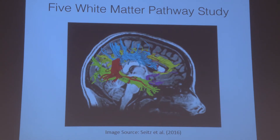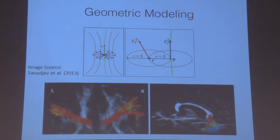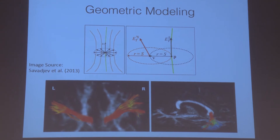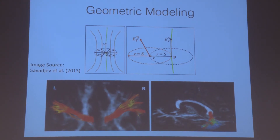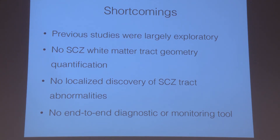Previous studies have used diffusion measures to show quantified group differences in different diseases, and have geometrically modeled white matter tracts for disease group differences. However, there have been several shortcomings: these studies were largely exploratory without an end diagnostic in sight. There's been no schizophrenia white matter tractography geometry quantification, no localized discovery of schizophrenia tract abnormalities, no visualizations to show that manifestation, and most importantly, no end-to-end full-fledged diagnostic and monitoring tool for neurologists to better monitor disease progression.